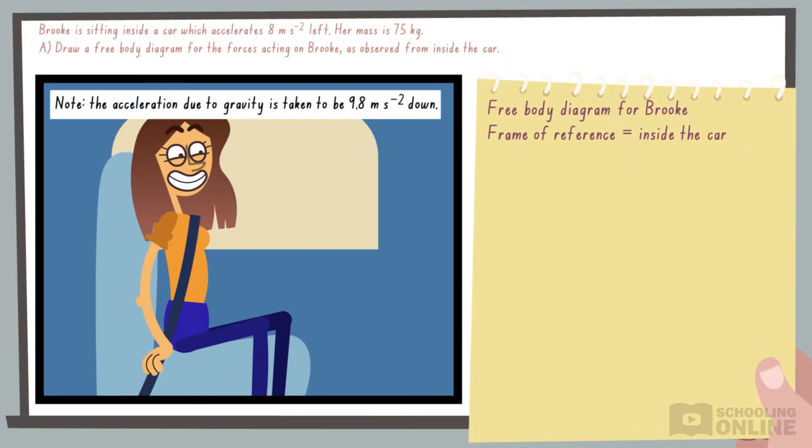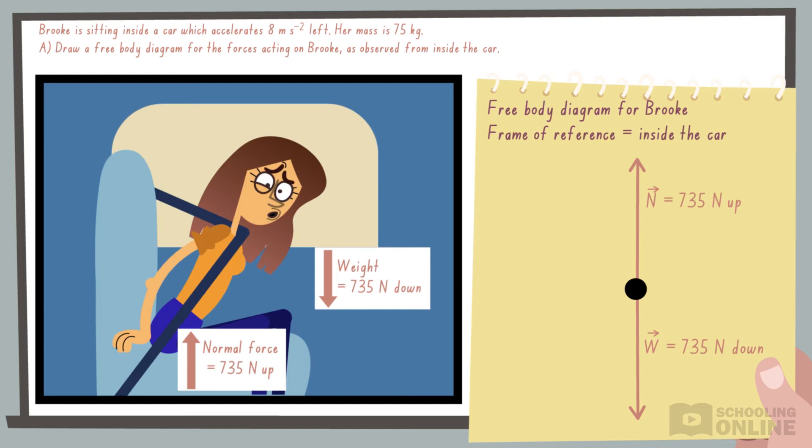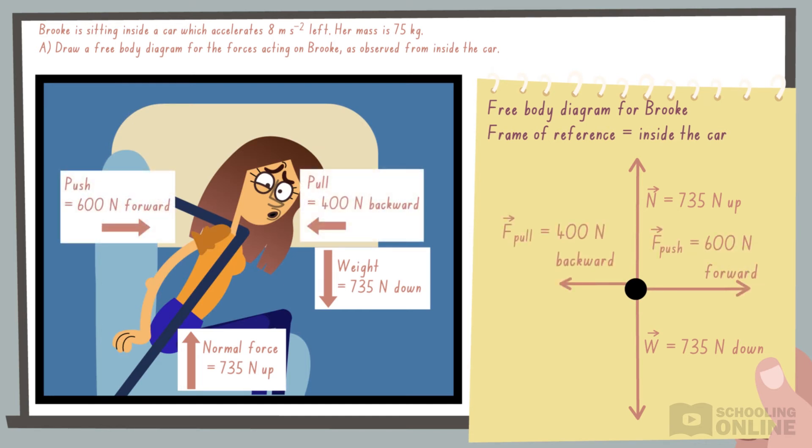Let's stop here to identify all of the external forces acting on Brooke as observed from inside the car. Her weight is balanced by an upward normal force from the seat. When the car brakes, Brooke is pushed forward. This is balanced by a pulling force from the seatbelt and friction from the seat.